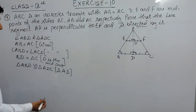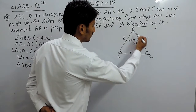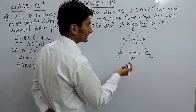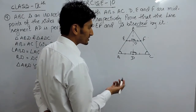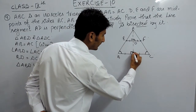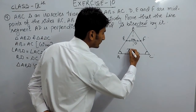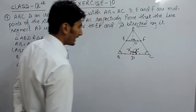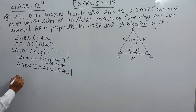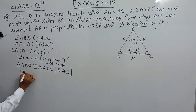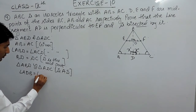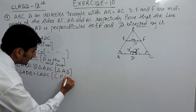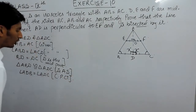Since these two triangles are congruent, all other corresponding parts must be equal. So this angle must equal this angle — angle ADB must be equal to angle ADC. This is by CPCT: corresponding parts of congruent triangles.